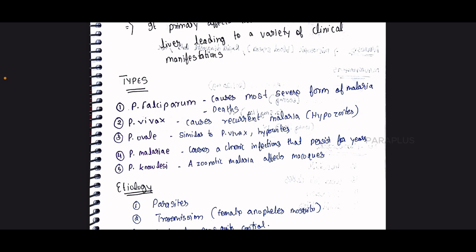Plasmodium malariae causes a chronic infection that persists for years, leading to long-term malaria. Plasmodium knowlesi is a zoonotic malaria that affects macaques.